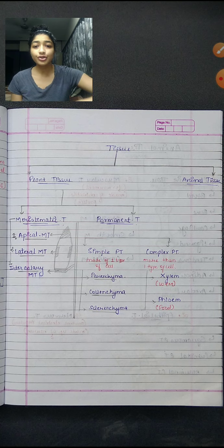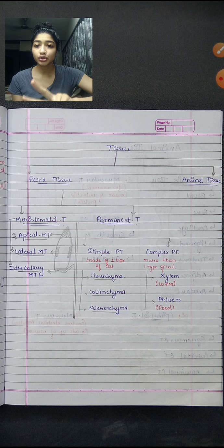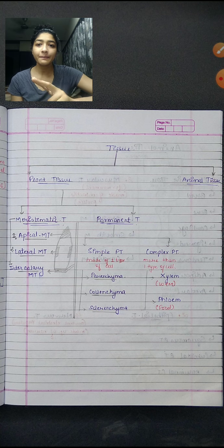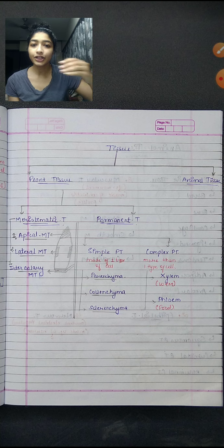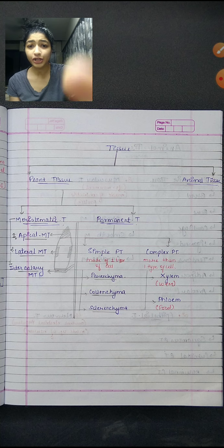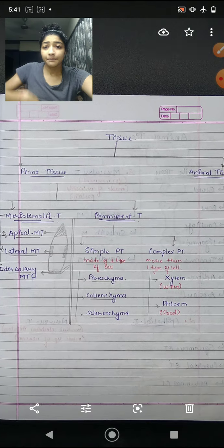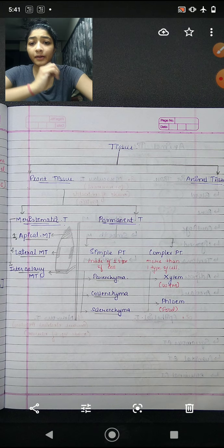Tissue is of two types: plant tissue and animal tissue. Plant tissue comes in two types: meristematic tissue and permanent tissue. We will first learn the plant tissue — meristematic plant tissue.